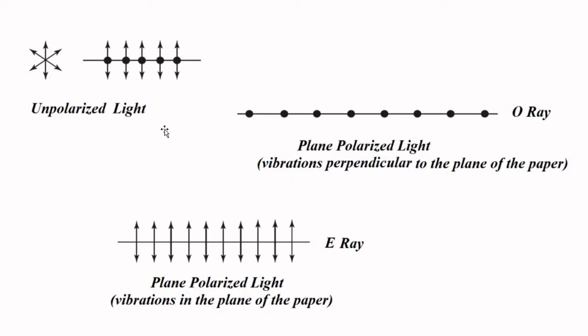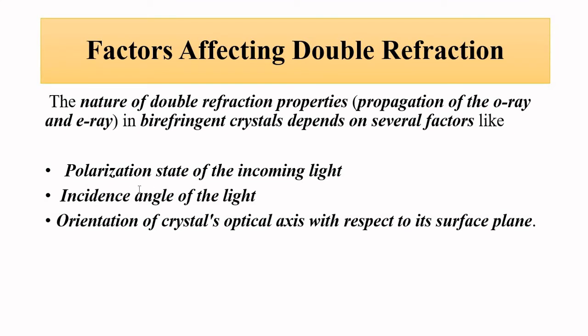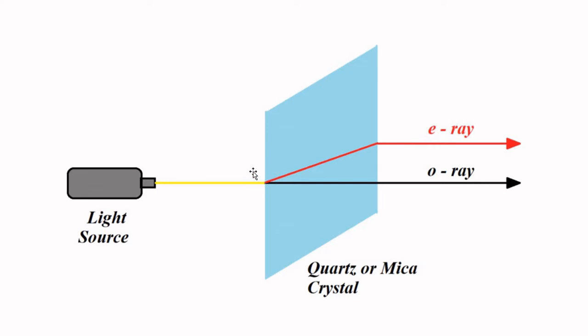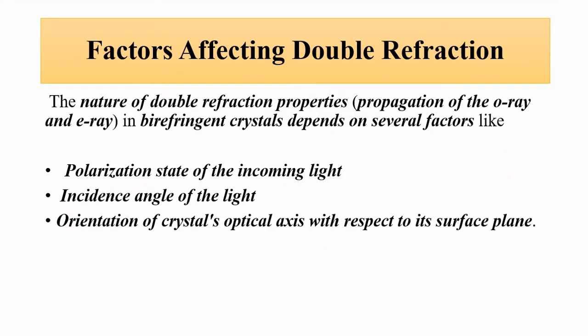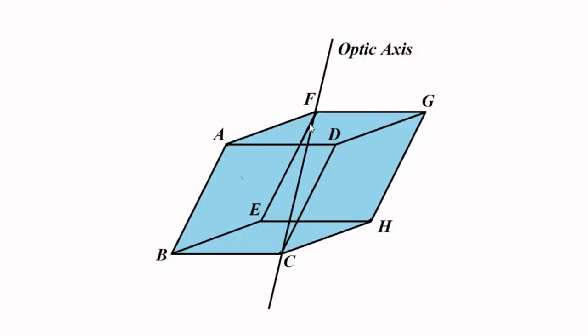Unpolarized light means the electric vectors are randomly oriented in different directions. Polarized light means the electric vectors are confined to a particular direction or plane. Another factor is the angle of incidence — at what angle the light makes contact with the crystal interface separating the crystal material from the medium in which the light initially travels. Then there is the orientation or direction of the optical axis.